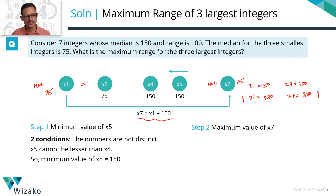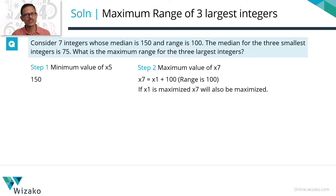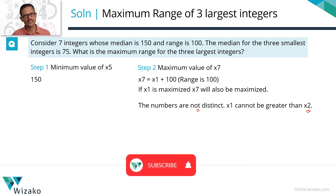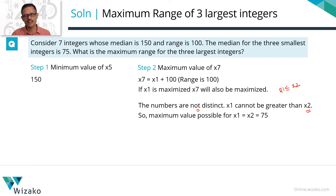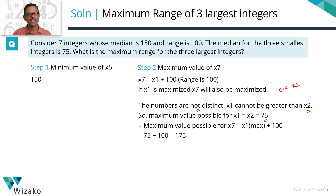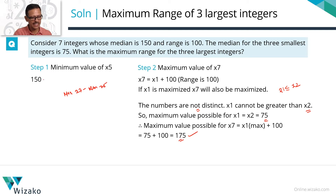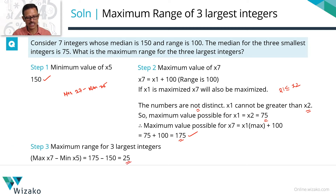Let's consolidate and find the maximum range. We said the maximum range for the three largest numbers equals max x7 minus min x5. Max x7 is 175 and min x5 is 150. The difference — the maximum possible range for the three largest integers — is 25.